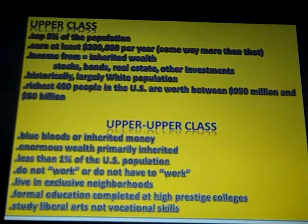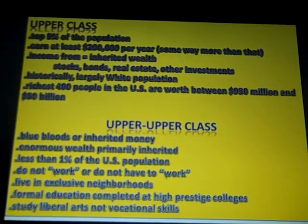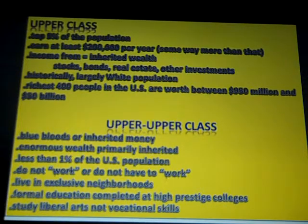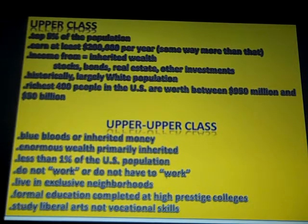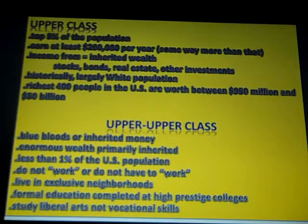The first division is the upper-upper class — the very top of the upper class. We're talking about the Blue Bloods, people with last names like Rockefeller or DuPont. This is inherited money; these people generally don't have to work. Enormous wealth, which is primarily inherited. Less than 1% of the population falls within this group. A lot of them live in exclusive neighborhoods generally in or close to urban areas. They complete formal education at very high-prestige colleges, and they're studying liberal arts, not vocational skills.